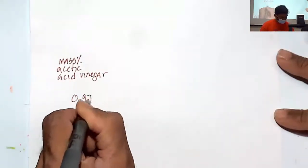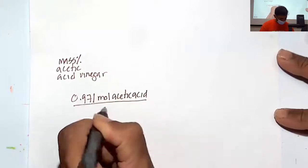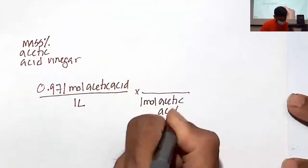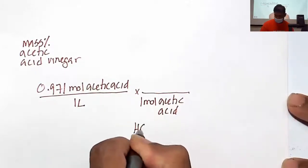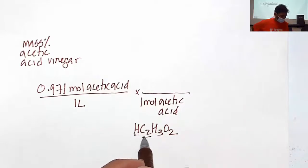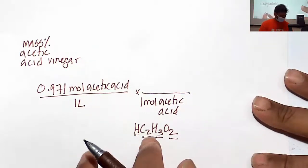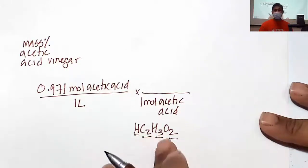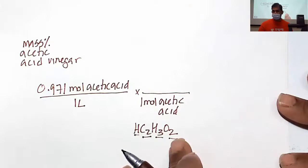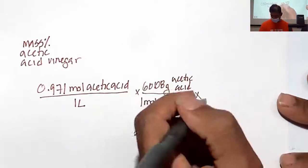Using our average concentration of 0.971 mol/L of acetic acid, we multiply by the molecular weight of acetic acid (HC2H3O2). Adding up: 1 H + 2 C + 3 H + 2 O using periodic table values — hydrogen is 1.01, carbon is 12.01 (×2), hydrogen again 1.01 (×3), and oxygen 16.01 (×2) — gives a molecular weight of about 60.08 grams per mole.